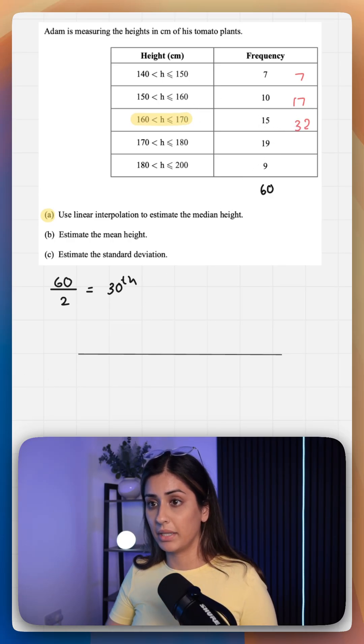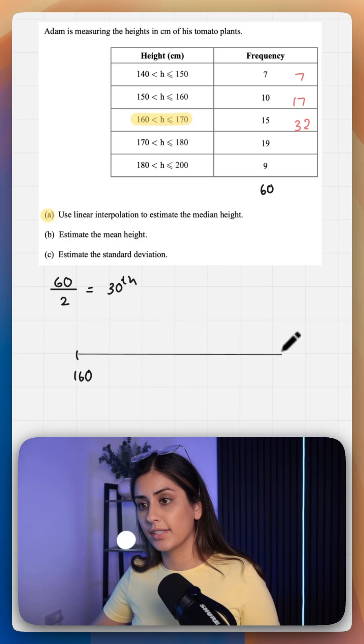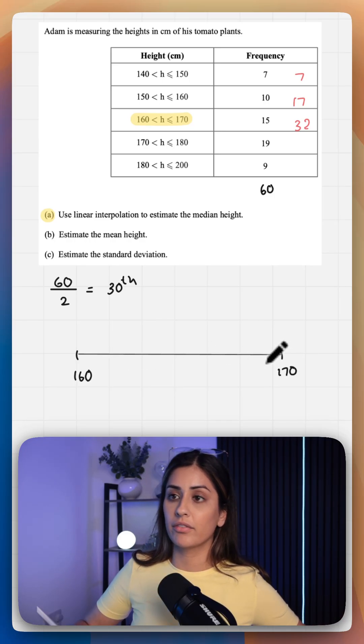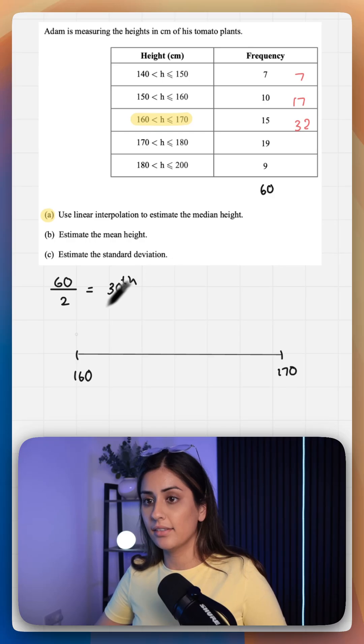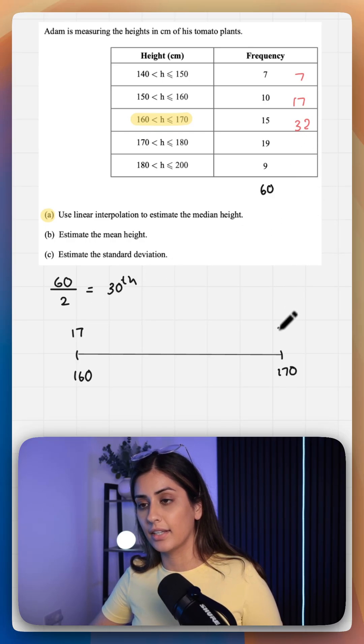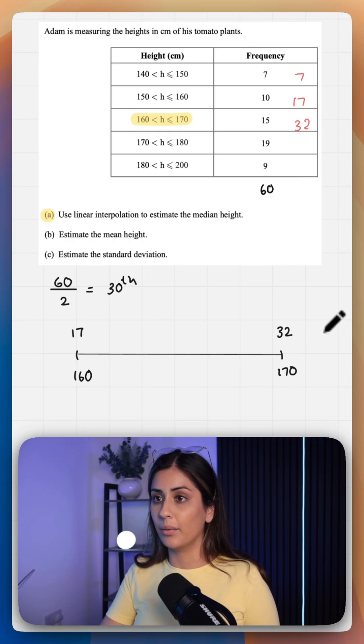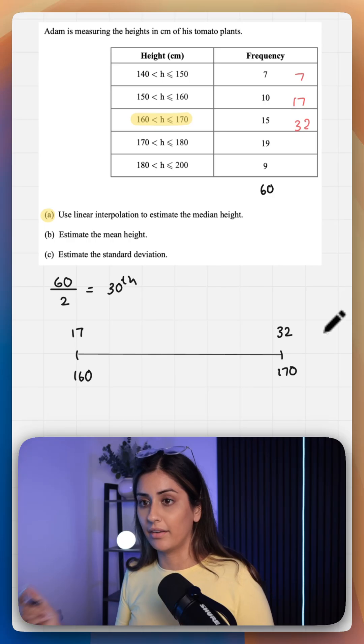We can visualize how to find the median using a straight line. So we want to plot our class width of 160 and 170 and the corresponding frequencies at each of those ends. We've got 17 here and 32. So on the top we have our cumulative frequency, on the bottom we have our class width.